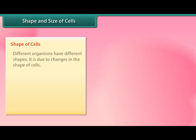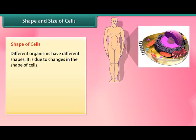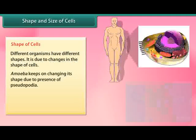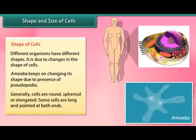Shape of cells: Different organisms have different shapes, due to changes in the shape of their cells. Amoeba keeps on changing its shape due to the presence of pseudopodia. Generally, cells are round, spherical, or elongated. Some cells are long and pointed at both ends.